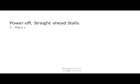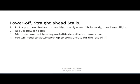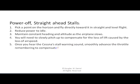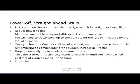Less challenging is the power-off, straight-ahead, flaps-up stall. Pick a point on the horizon, fly directly toward it in straight-and-level flight, and reduce power to idle. Maintain constant heading and altitude as the airplane slows. You will need to slowly pitch up to compensate for the loss of lift caused by the loss of airspeed. Once you hear the Cessna stall warning sound, smoothly advance the throttle, remembering to compensate for the sudden increase in P-factor. Drop the nose slightly to accelerate more quickly, and once the stall warning silences, return to level flight until you've reached best rate of climb airspeed, then climb. Throughout the exercise, keep the wings level and the ball centered.